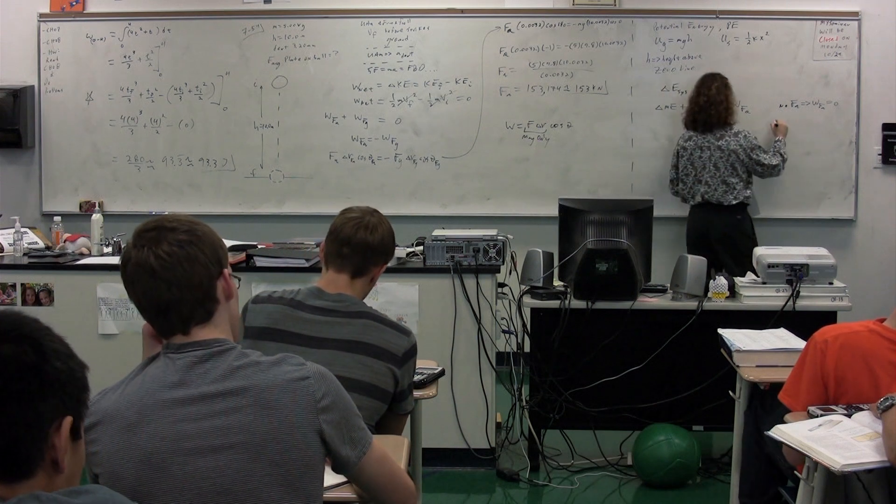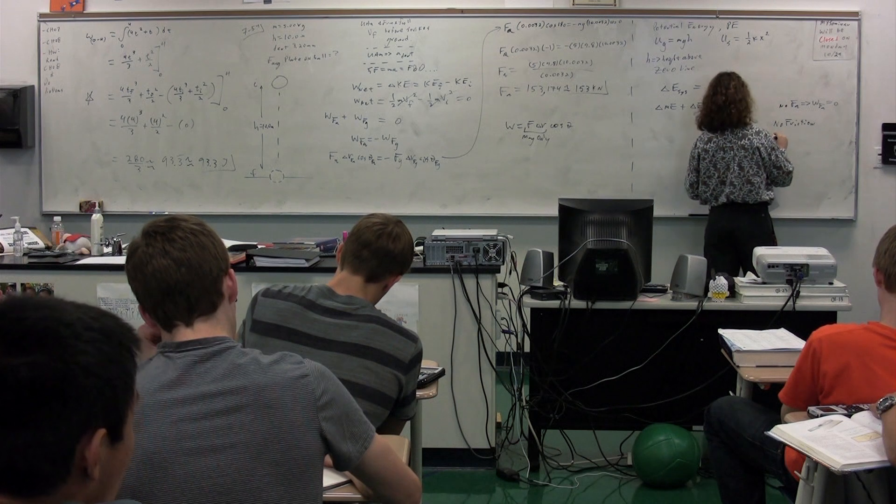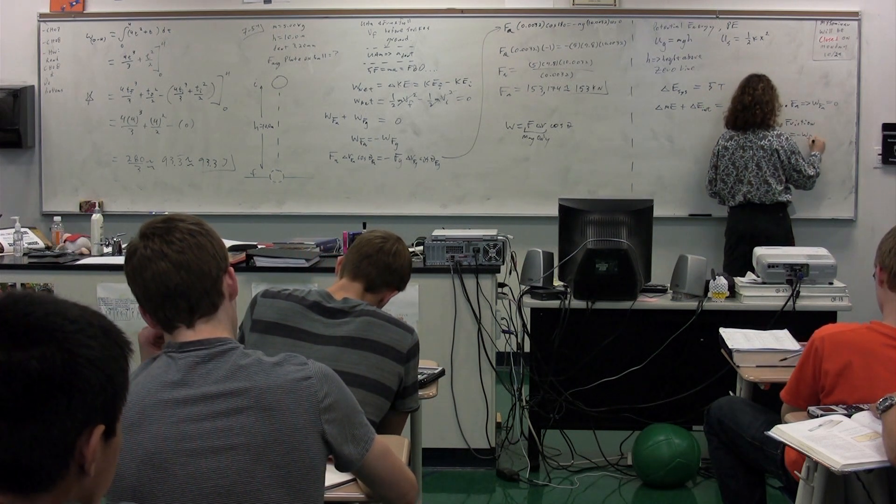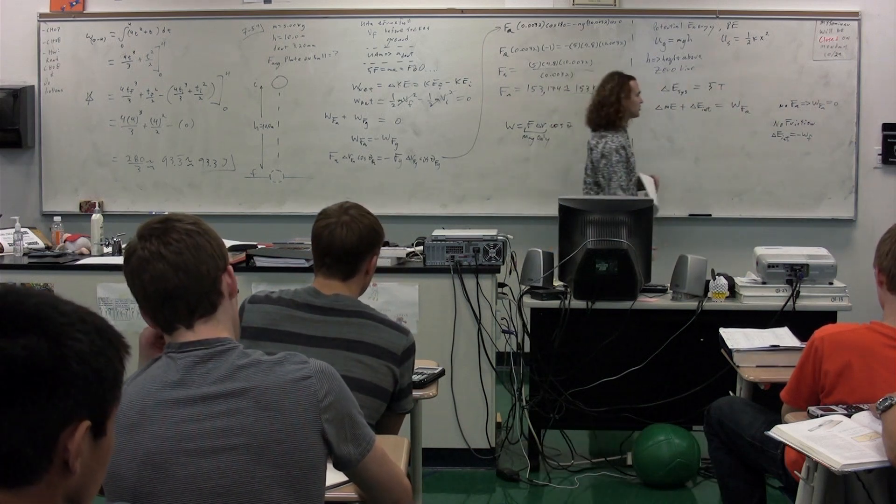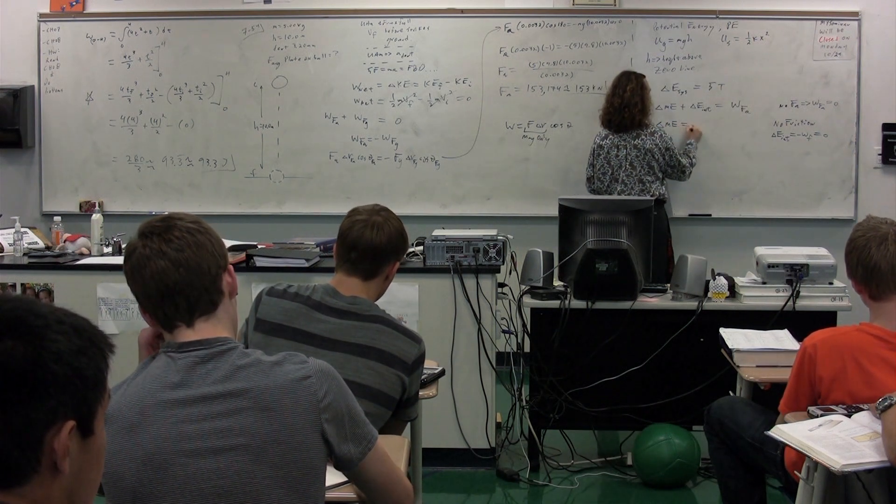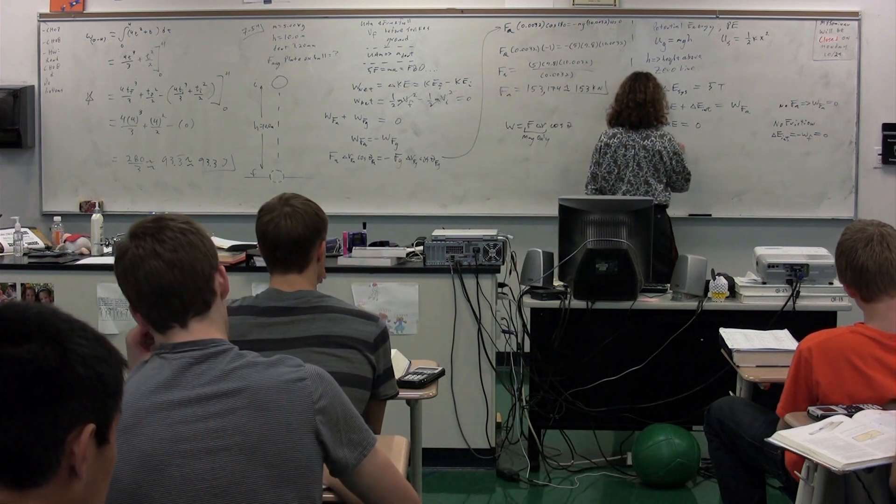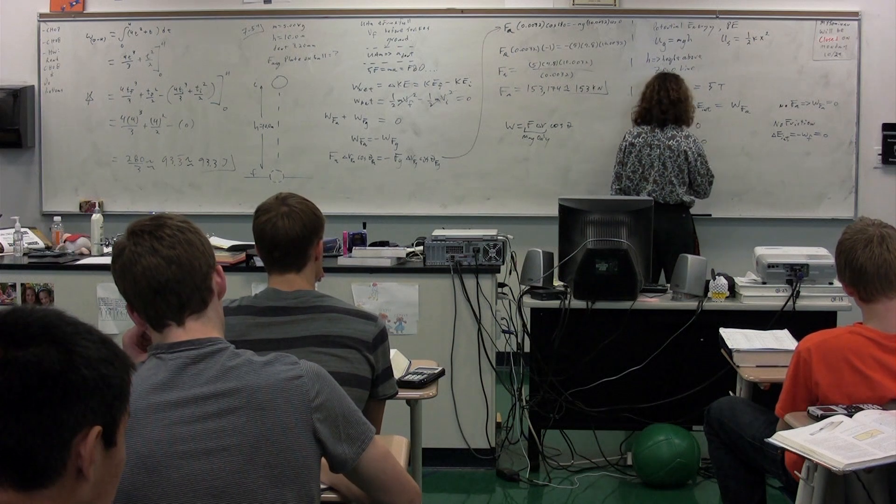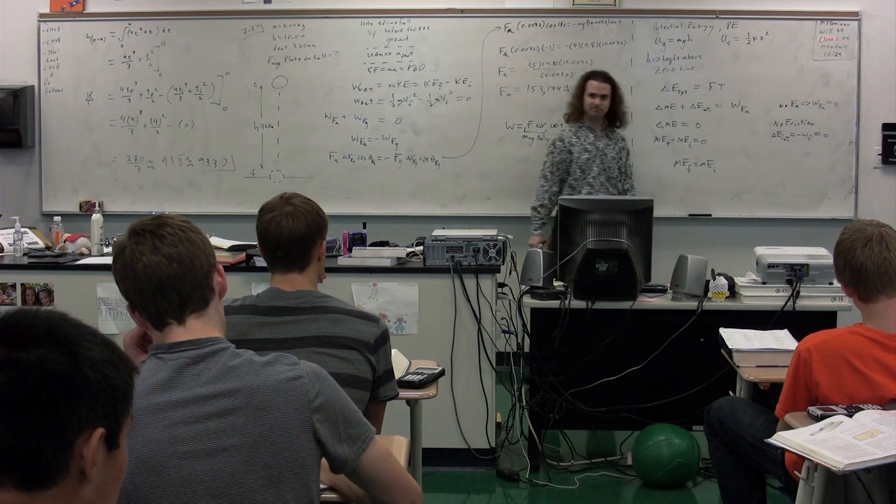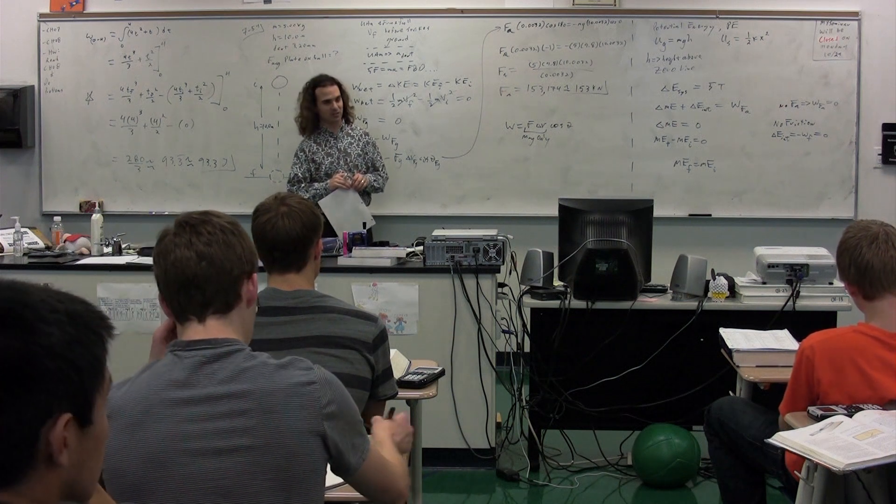If there is no friction, you should recall that the change in internal energy of the system was equal to the negative of the work due to friction. So, if there's no friction, then the change in internal energy of the system is equal to zero. And what we get is that the change in mechanical energy of the system equals zero, or mechanical energy final minus mechanical energy initial equals zero, or mechanical energy final equals mechanical energy initial, which should look familiar. It is called conservation of energy.